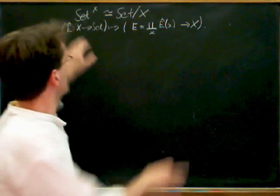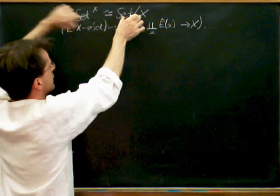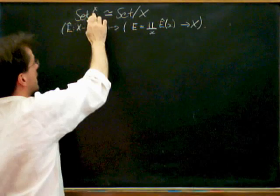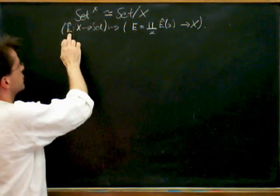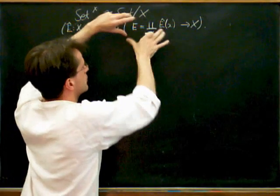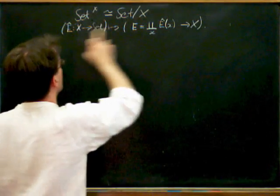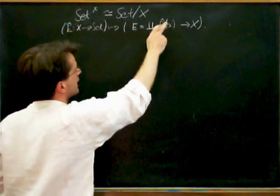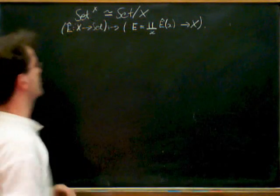Right, so last time we set up this equivalence of categories between the functor category from X into the slice category. So associated to a functor from X to X we have this fibration, this associated fibration as it's known, sometimes called the Grothendieck fibration. When I was talking about the functor I was putting a hat on, and I was taking the hat off when I was talking about the fibration there.